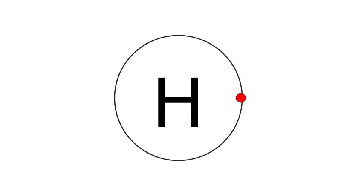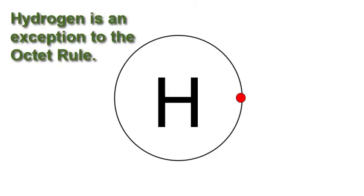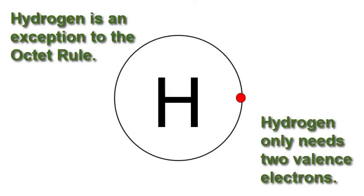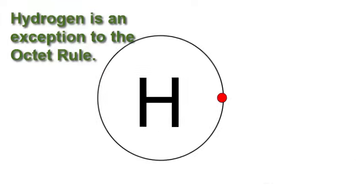Hydrogen has one valence electron. Hydrogen is an important exception to the octet rule. Hydrogen only needs two valence electrons to have a full outer shell. Instead of an octet, think of it as a duet.